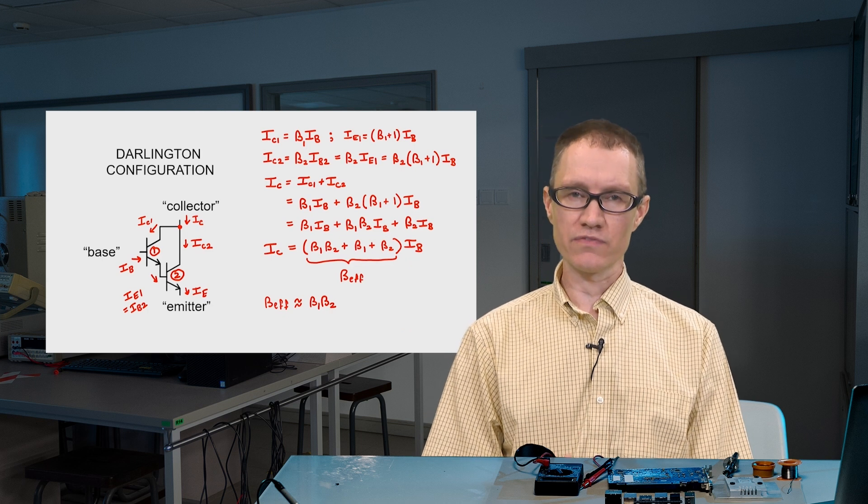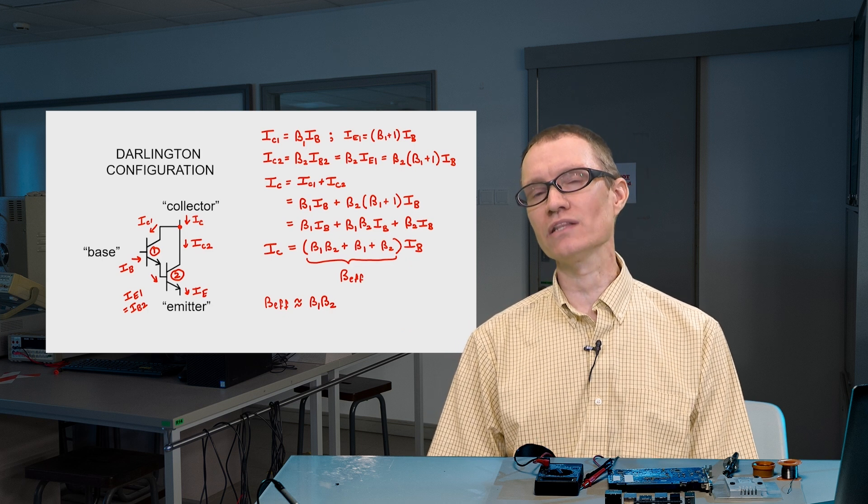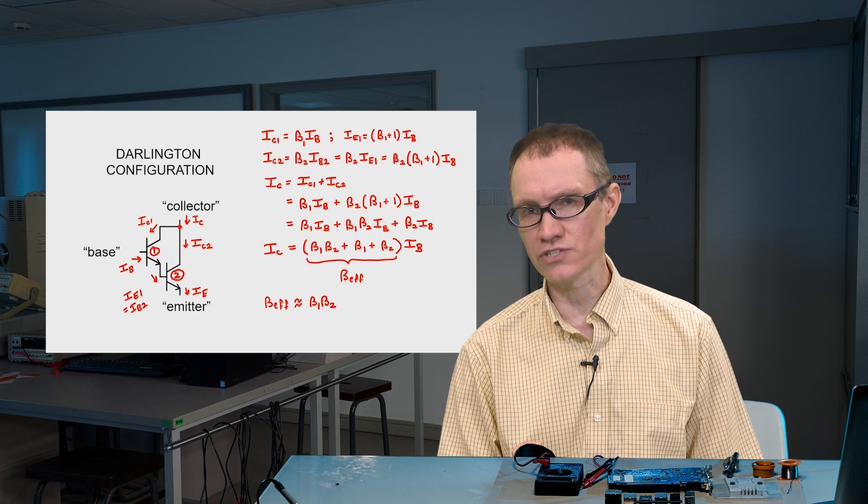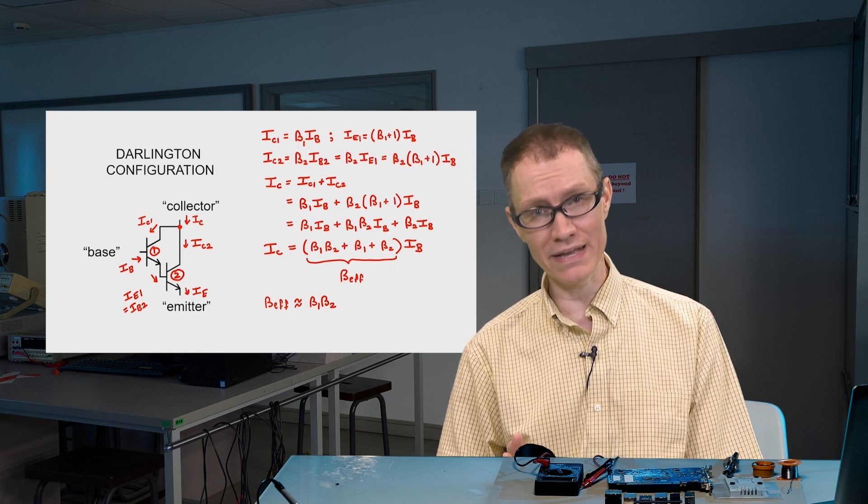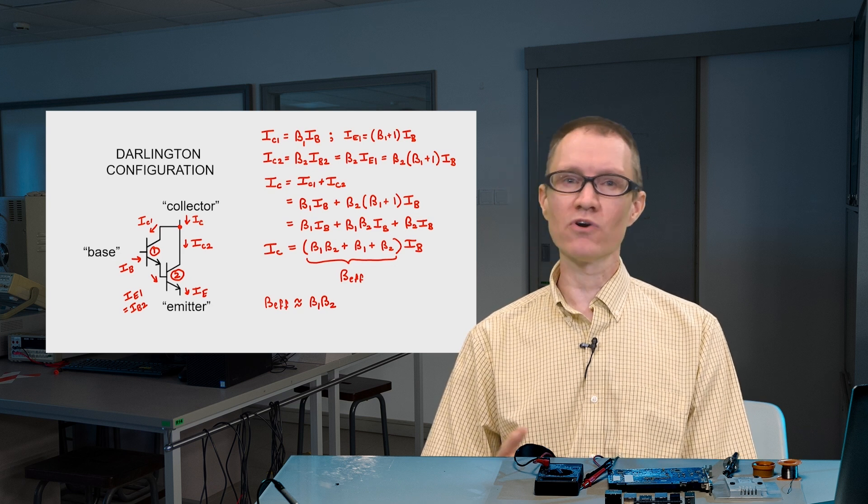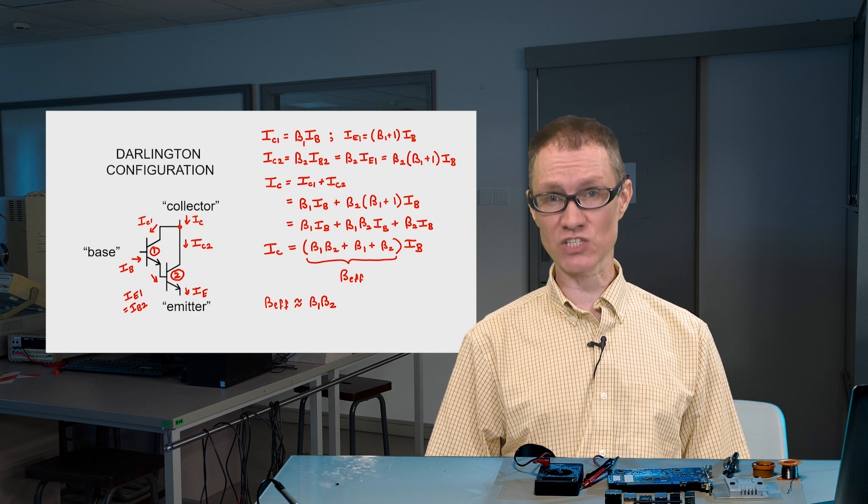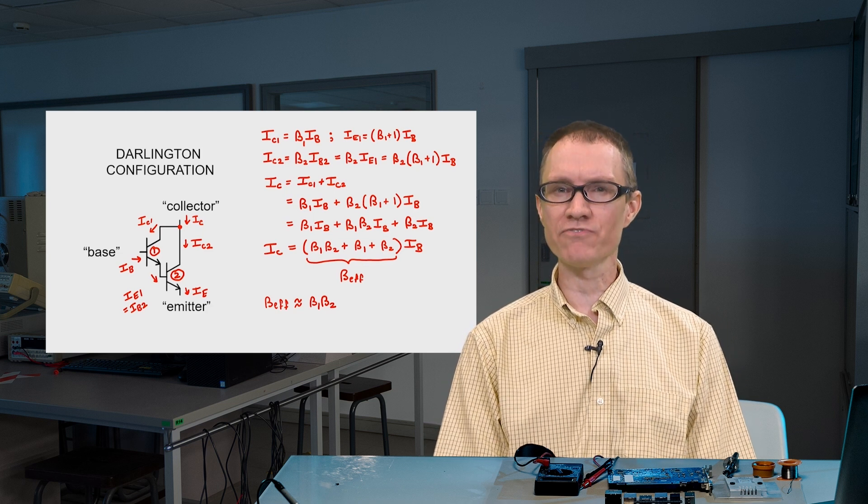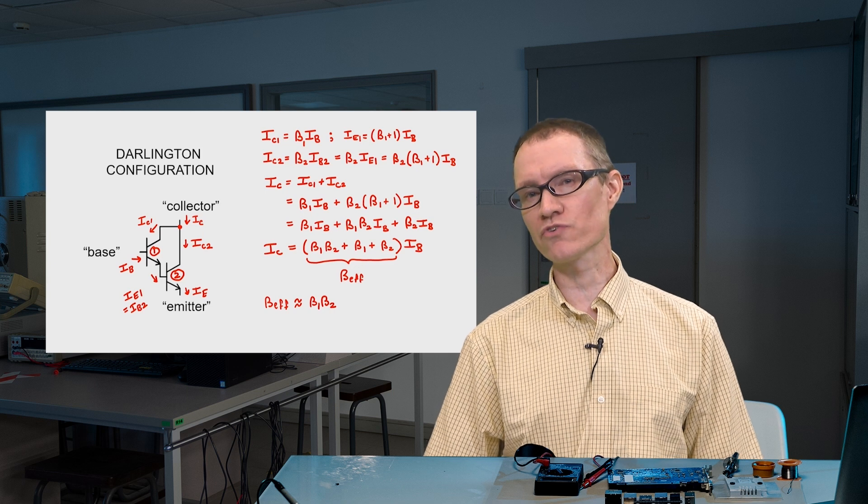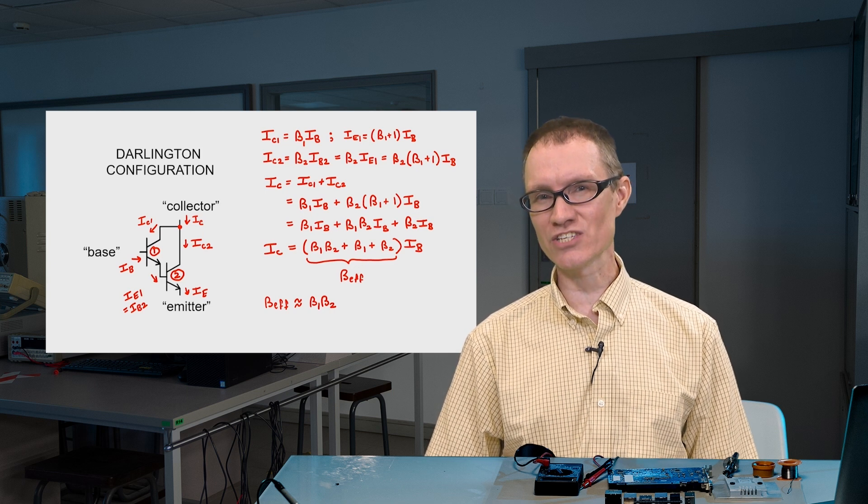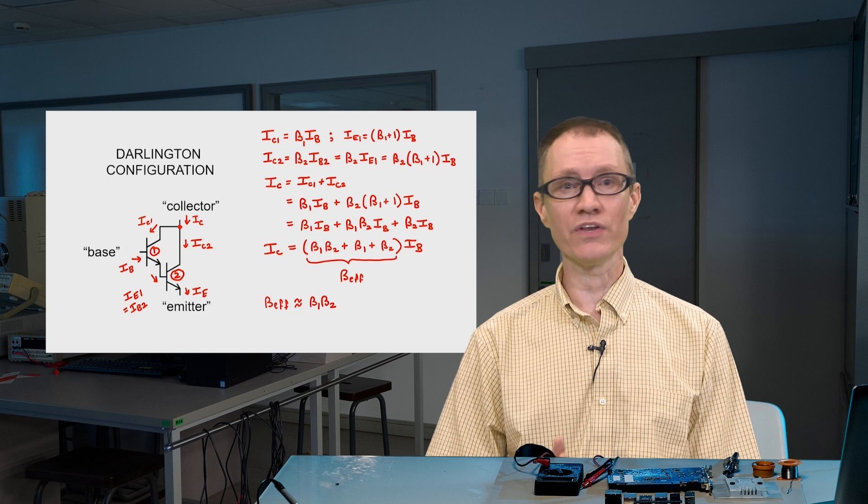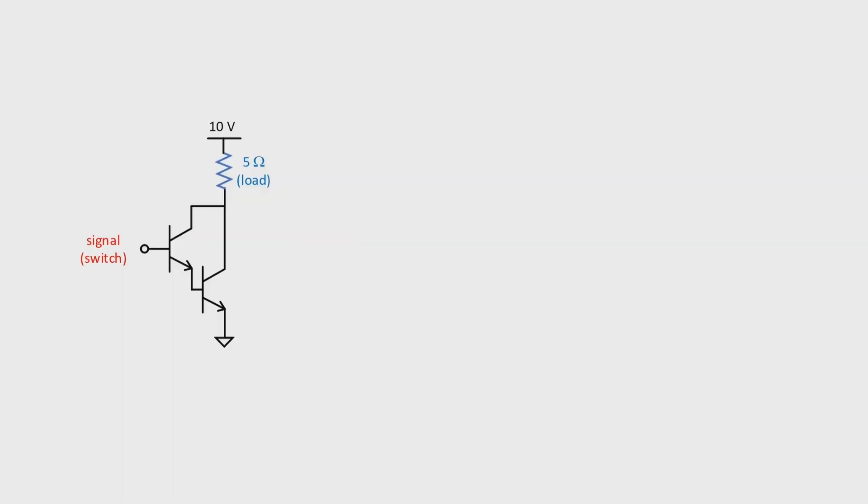In other words, the Darlington configuration allows us to take a single transistor that has only beta as its current gain and form a new super transistor that has a gain of beta squared. That's going to help us solve this problem when we're trying to use the transistor as a switch when you need a lot of load current. So let's work this problem again, but we're now going to assume that we have a Darlington configuration.